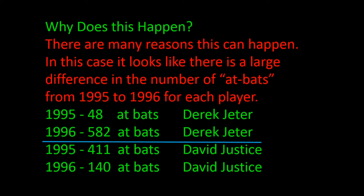Why does this happen? The answer is different for different situations, so you have to look at the original data more closely to understand why. In this case, there's a big difference between the years in the at-bats. Derek Jeter had only 48 at-bats in his rookie year and 582 at-bats in the following year — a huge difference. David Justice also had a large difference in his at-bats between 1995 and 1996. So when the data is looked at year by year, David Justice comes out on top, but when the data is combined, we get a different result. This phenomenon is called Simpson's paradox.